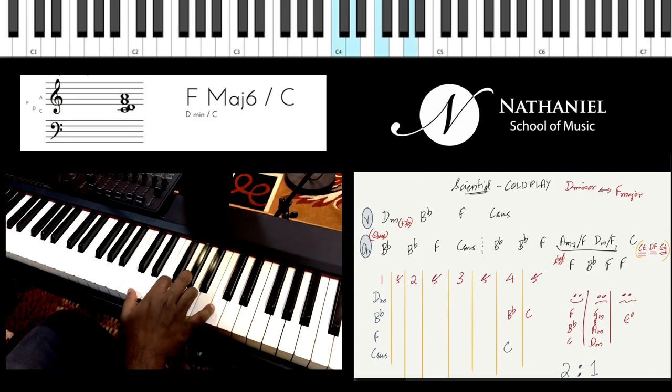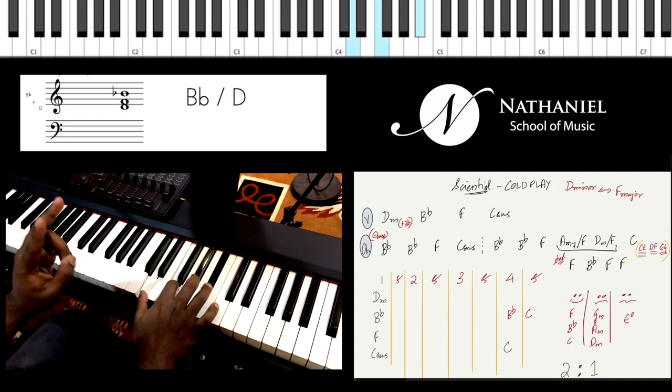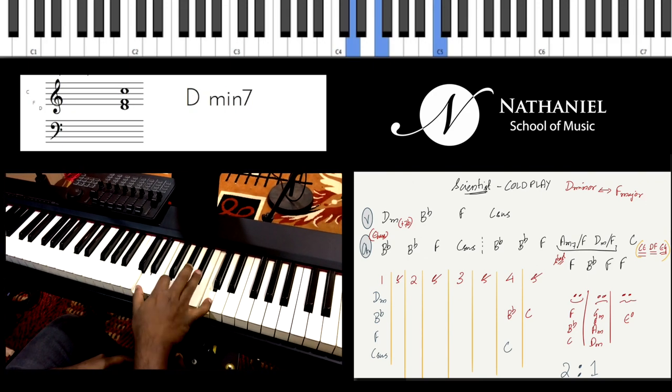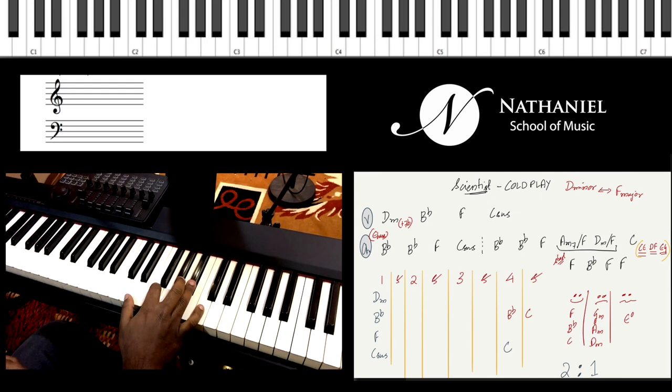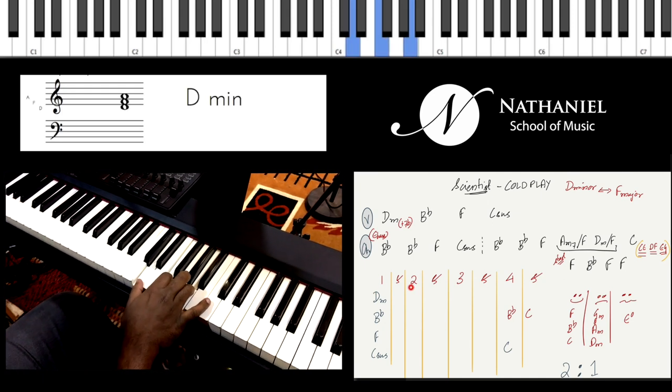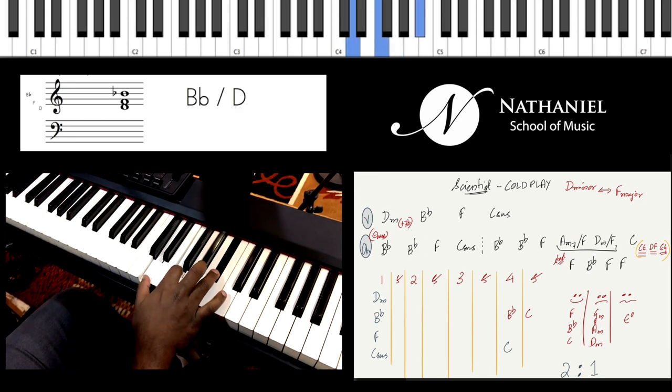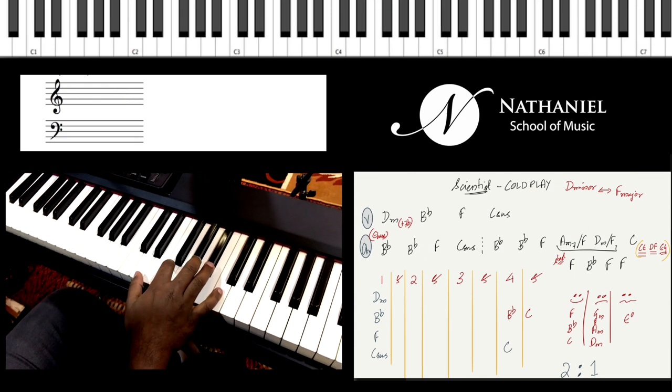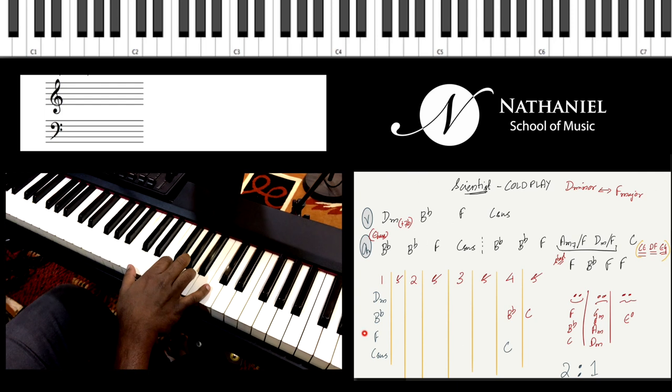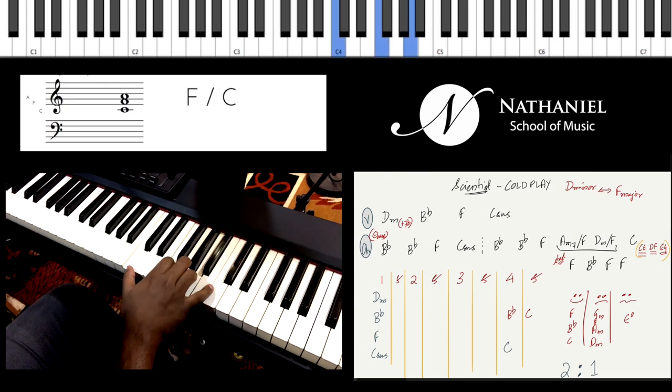So let's do that again. D minor, 2, 3, 4. B flat, 2, 3. That's B flat and C. So I've also notated that down in the grid. So you have D minor, 2, 3, 4. B flat, 2, 3, 4. So at the end, you're sort of playing B flat and C as individual notes. Then you come down to F. F, 2, 3, 4. C.